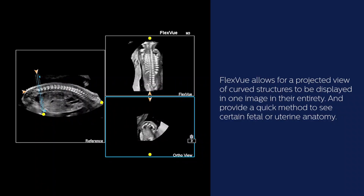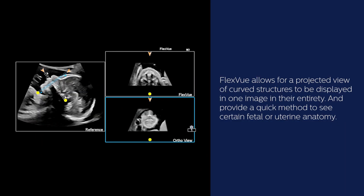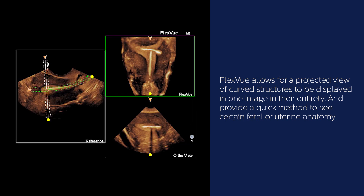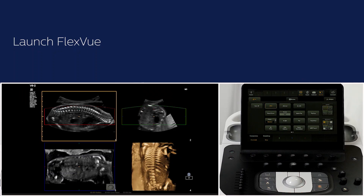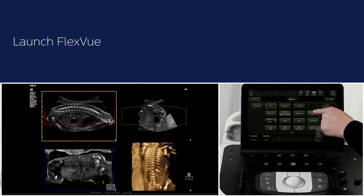FlexView allows for a projective view of curved structures to be displayed in one image in their entirety and provides a quick method to see certain fetal or uterine anatomy. Following a 3D acquisition — here an example of a fetal spine — FlexView is activated on the touchscreen.